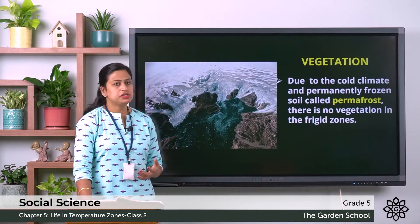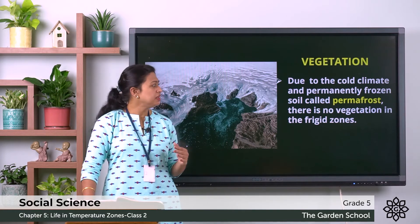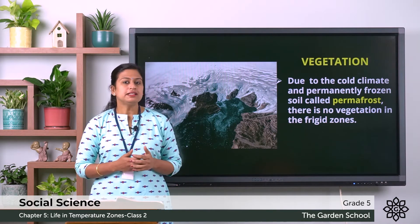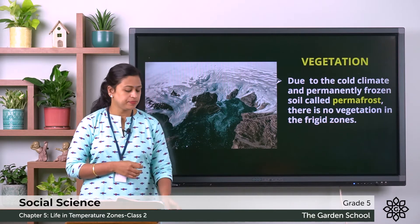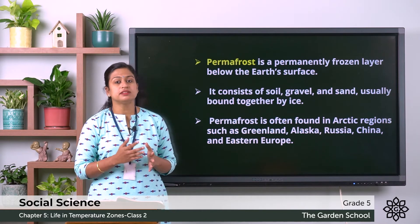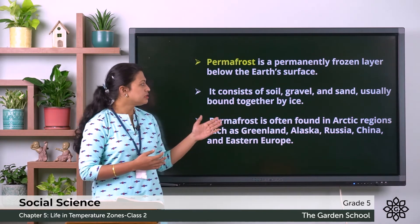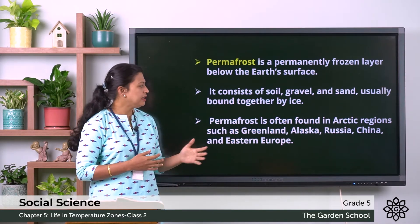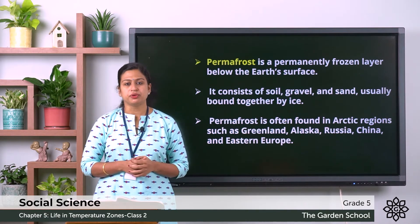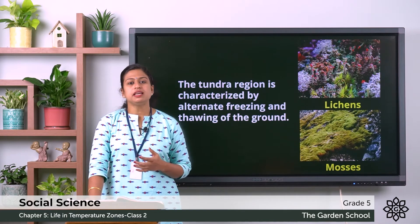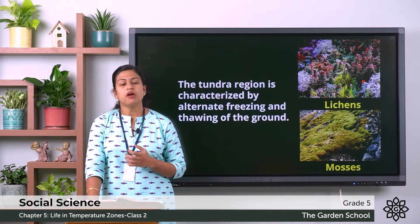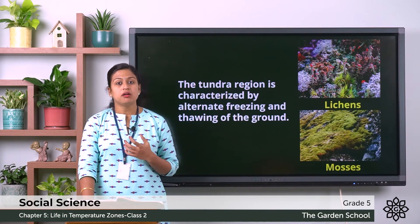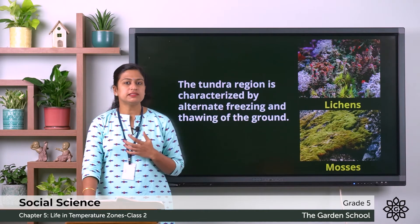Due to the cold climate and permanently frozen soil, known as permafrost, there is no vegetation in this zone. Permafrost is the permanently frozen layer below the earth's surface and it consists of soil, gravel and sand which are bound together by ice. It can be found in arctic regions such as Greenland, Alaska, Russia, China and Eastern Europe. In the Tundra region, there is alternate freezing and thawing of ground; the thawing season is the snow melting season, and you can find lichens, mosses and some scanty grasses.